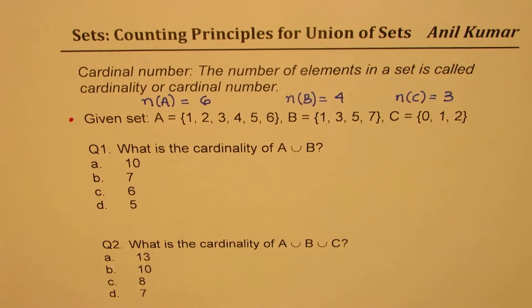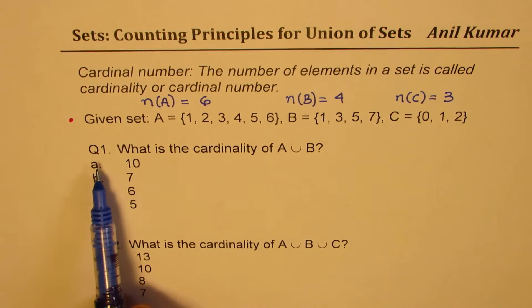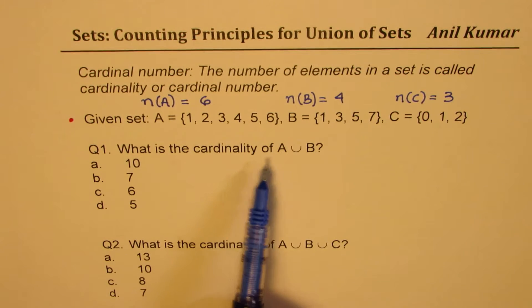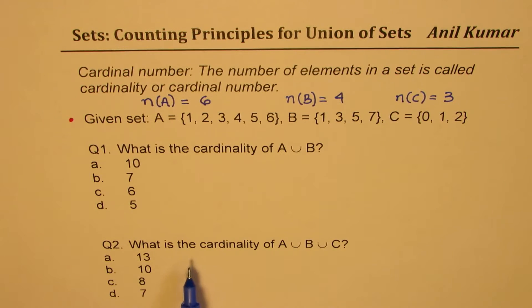Now, based on this, we have two different questions where we'll understand how to count the number of elements in union of sets. Question number 1 is, what is the cardinality of A union B? Four choices are given to you. And question number 2 is, what is the cardinality of A union B union C? You can pause the video, answer the question, and then look into my suggestions.